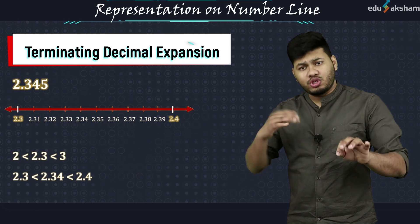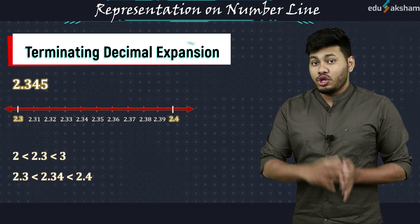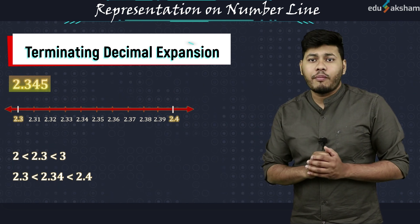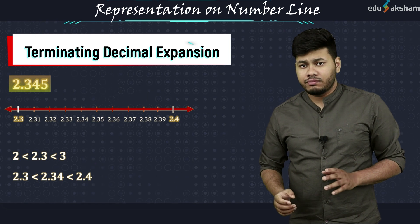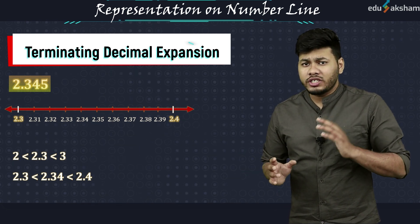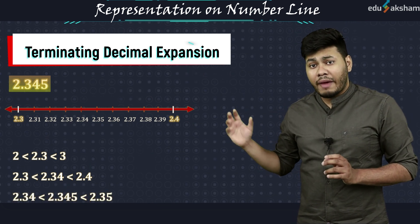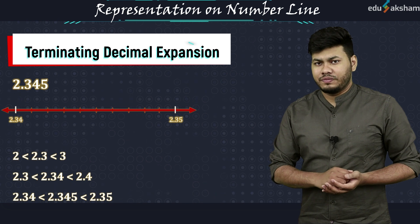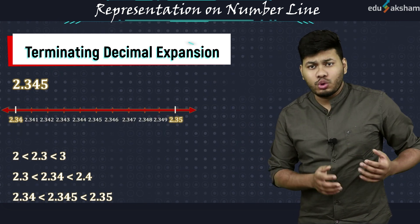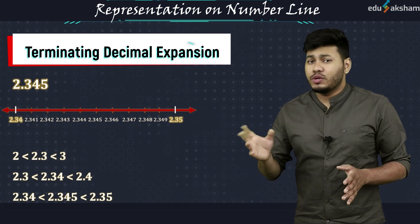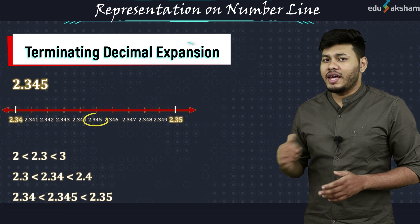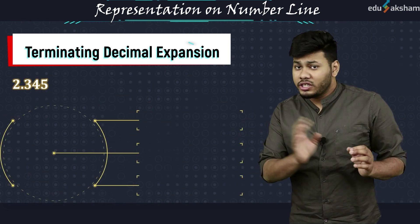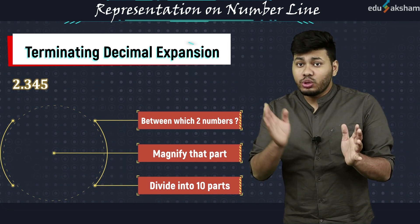But is 2.34 the number we actually wanted to find, which was 2.345? No. So now we will consider up to 3 decimal places, which includes the entire number, and we will find where 2.345 lies. 2.345 must lie somewhere between 2.34 and 2.35. We will again magnify this portion between 2.34 and 2.35 and divide it into 10 equal parts, numbering them as 2.341, 2.342 and so on. Now you can spot the number 2.345. We followed the same process for each step — we zoomed into the part where the number would lie and divided that part into 10 equal parts.